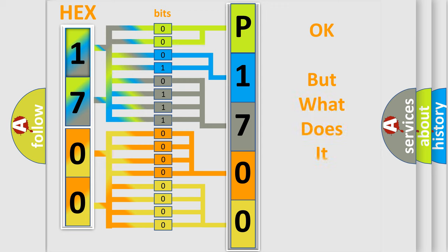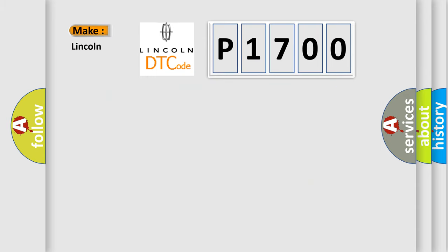The number itself does not make sense to us if we cannot assign information about what it actually expresses. So, what does the diagnostic trouble code P1700 mean specifically for Lincoln car manufacturers?